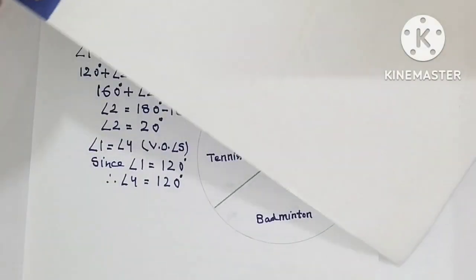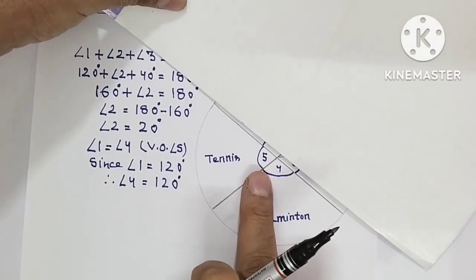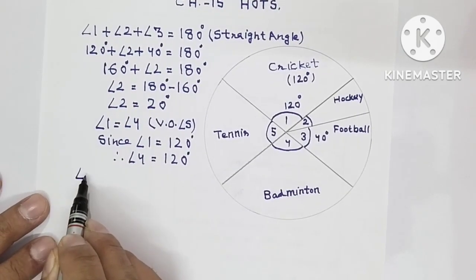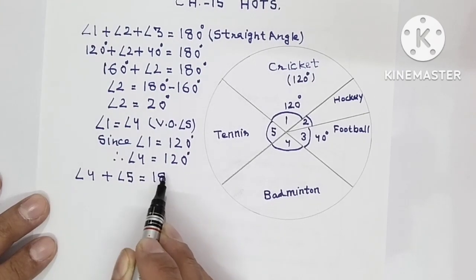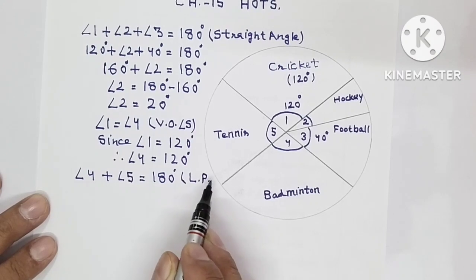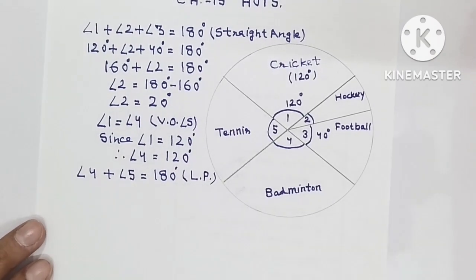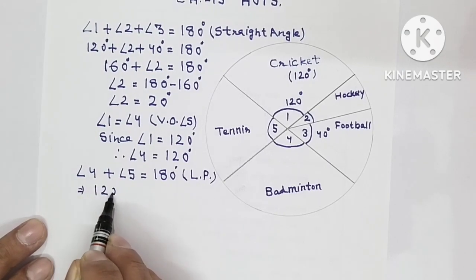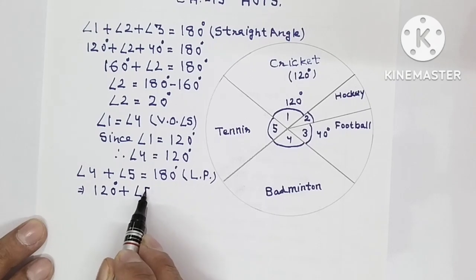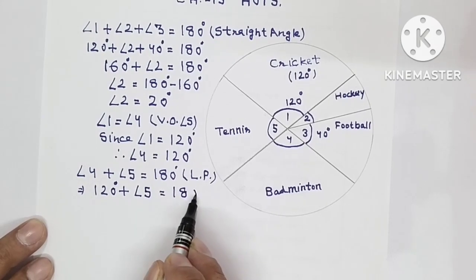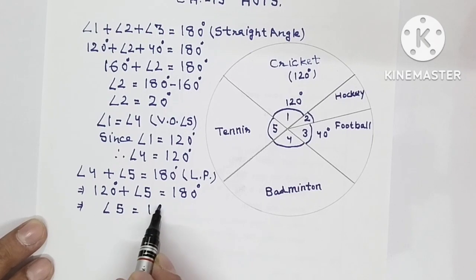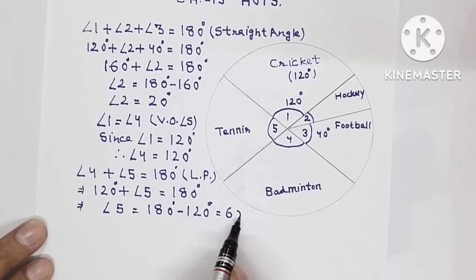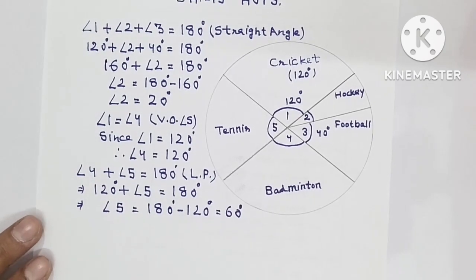Now what you do, now cover this from top like this. Then four and five are forming linear pair. So you will write here angle four plus angle five is equal to 180 degrees, that is a linear pair. So angle four is of 120 degrees plus angle five and that is equal to 180 degrees. So angle five can be found from here, 180 degrees minus 120 degrees, so that is equal to 60 degrees.